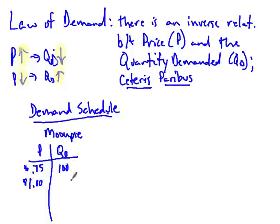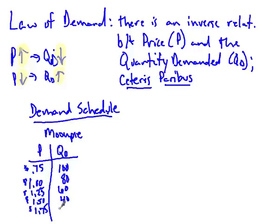If we raise the price to $1.00, the quantity demanded drops to 80. At $1.25 it drops to 60. At $1.50 it goes to 40. At $1.75 it drops to 20. And at $2.00, we'd only sell 10 Moon Pies. This is the demand schedule — two columns, price and quantity demanded. As price rises, quantity demanded falls, which confirms the law of demand.